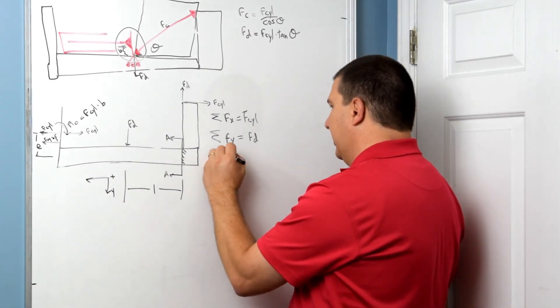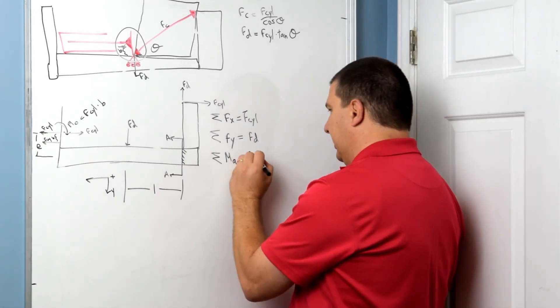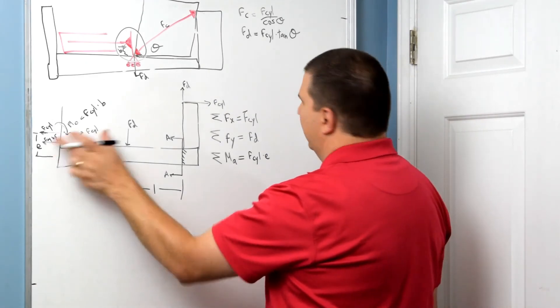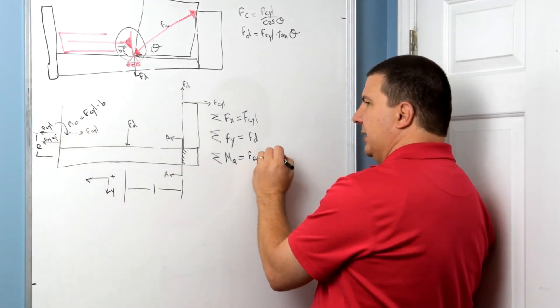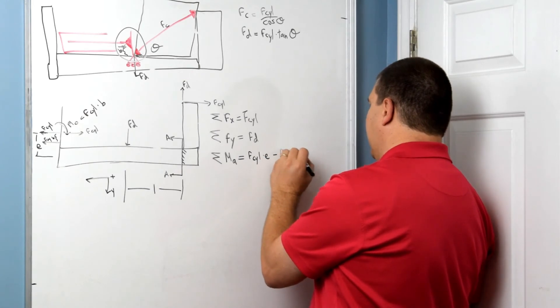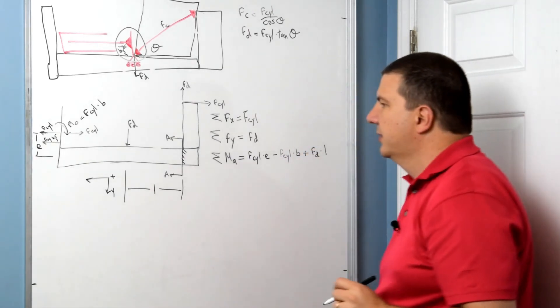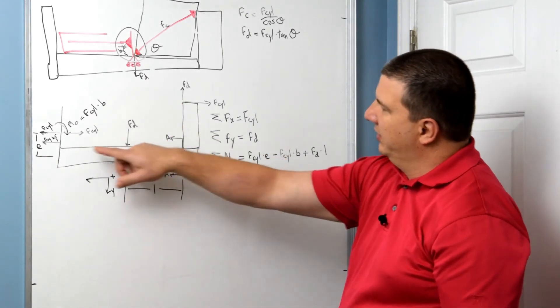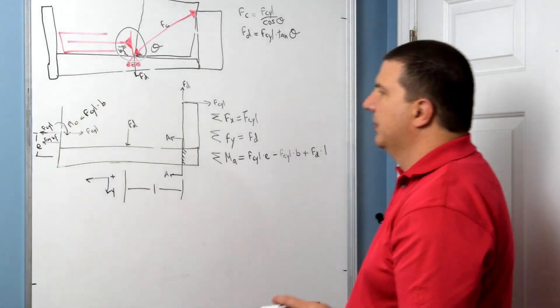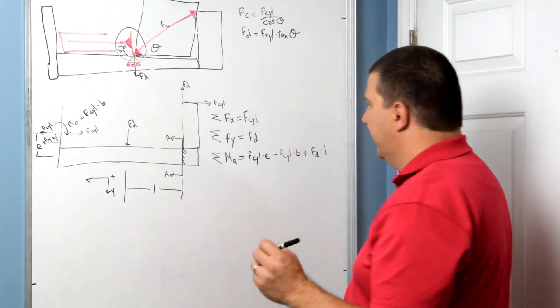All right. And then my moment, I'm going to call it my moment at A. And that's going to equal force of the cylinder times E. All right. And I can recognize this as a couple, and that'll be minus the force of the cylinder times B. And then I'm going to add the force of D times L. All right. So I've got this one going this way, these two going the opposite way, and this one, the top force, going that way. All right. So we could simplify this, but I don't see a need to right now.